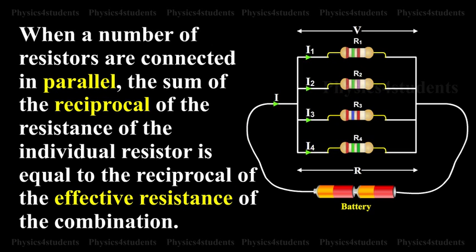Thus, when a number of resistors are connected in parallel, the sum of the reciprocal of the resistance of the individual resistors is equal to the reciprocal of the effective resistance of the combination.